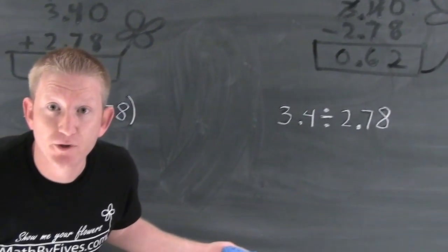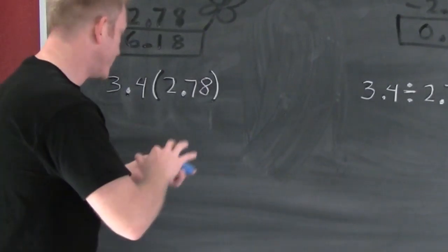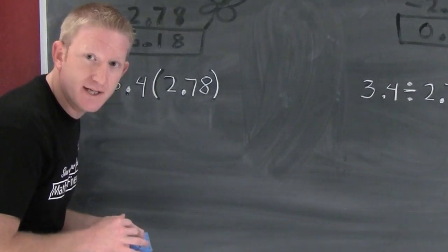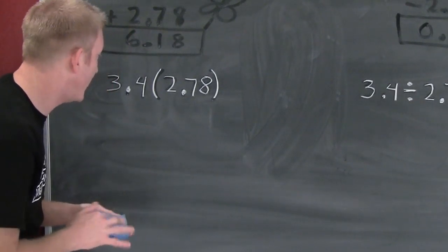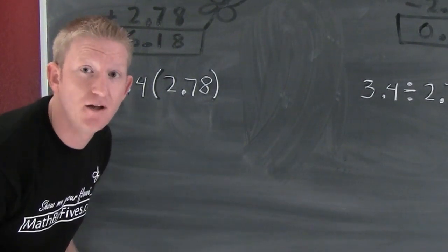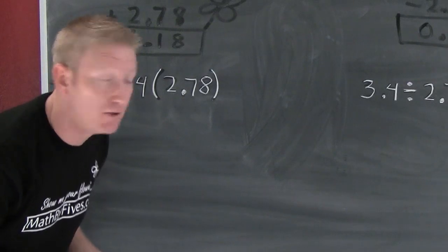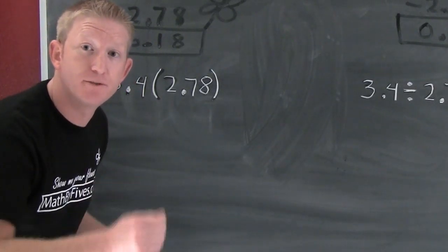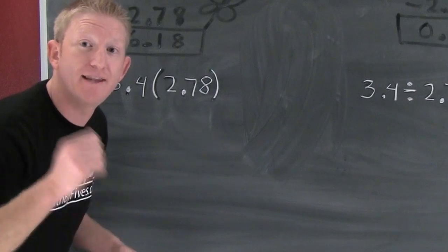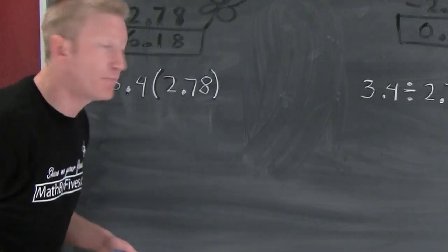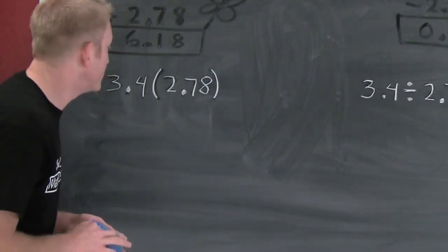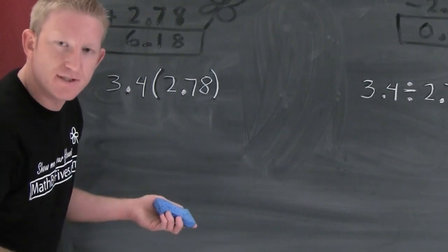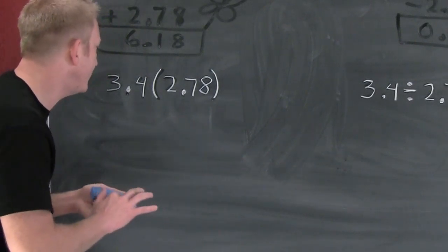But what if I wanted to multiply these decimals? Decimal multiplication can be swell. Do I have to line up the decimal places? No. Do I have to put the bigger one on top? No. With multiplication, we're going to multiply then move it. We're going to multiply the numbers, and then move the decimal the number of decimal places that were in my original factors.